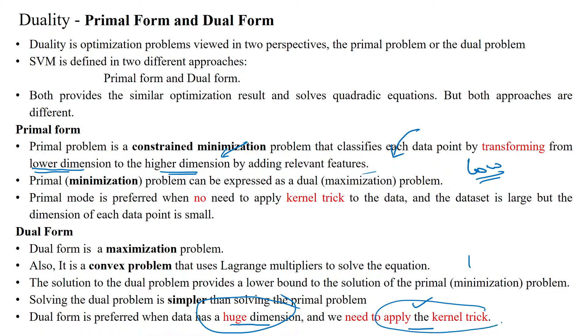When we have huge dimensions like 100 or 1000 features, the dimension is very large, so we must use kernel trick. When using kernel trick, the dual problem will be better than primal problem.